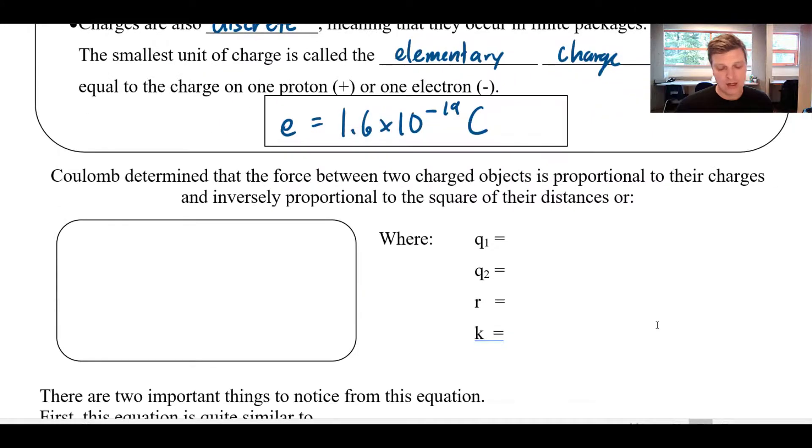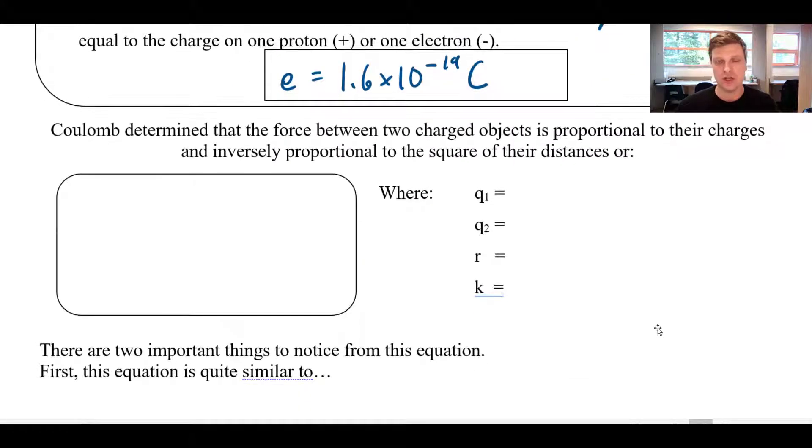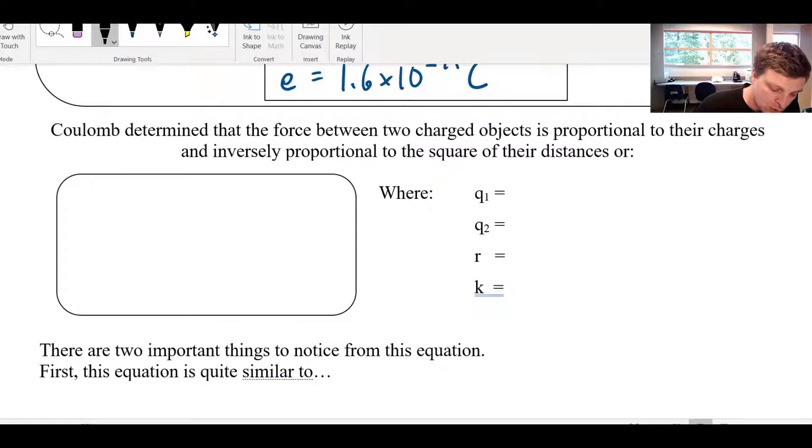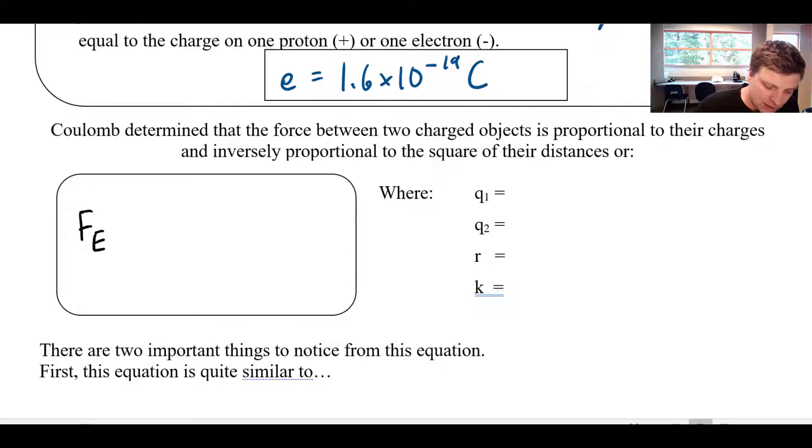So in order to calculate the force between two charges, you are probably aware that opposite charges are going to attract each other, positives attract negatives and vice versa. And the same charges are going to repel. Two positive charges are going to push apart, and so would two negative charges. To calculate this amount of force, we can use Coulombs law, which says the electrostatic force between two charges is equal to k times q1 times q2, all divided by r squared.